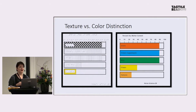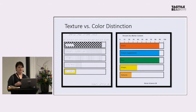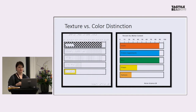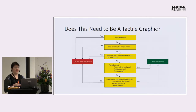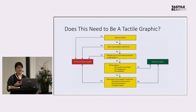Limit textures to just a few — three or four is ideal — to avoid cognitive overload. If you have 17 different textures on your map, you'll start confusing them. Make sure textures are very different from one another. The operative word you'll hear me say over and over again is: simplify, simplify, simplify. Before you make a tactile graphic, you should decide whether you should make it at all.